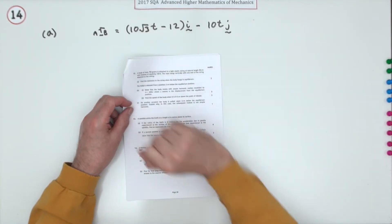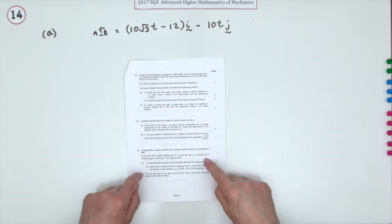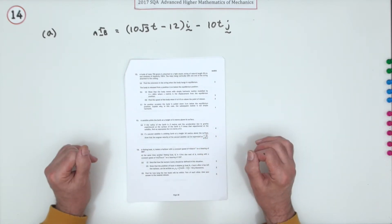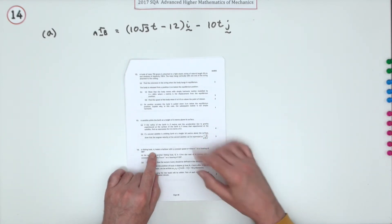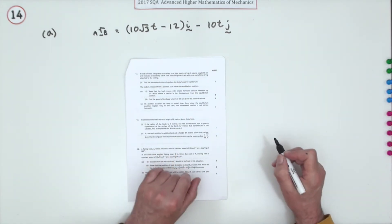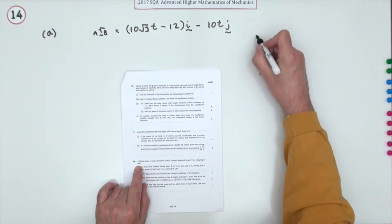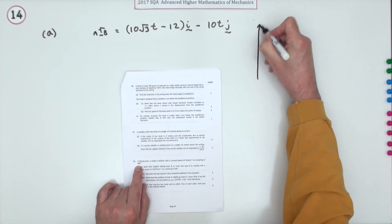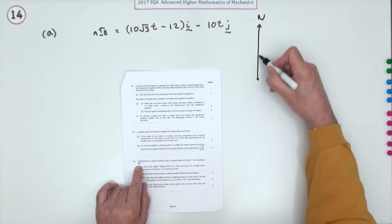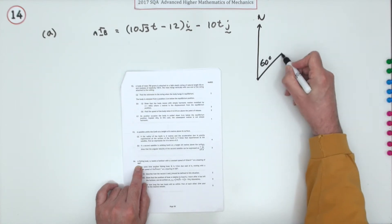Number 14, from the 2017 Mathematics and Mechanics paper. This question is about vector motions. A fishing boat A leaves a harbour with a constant speed of 10 kilometres per hour on a bearing of 060 degrees, so it's heading off at 60 degrees from north. I'll draw this out as we go along, setting north at the origin.